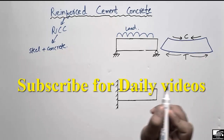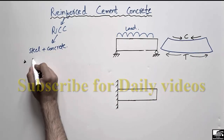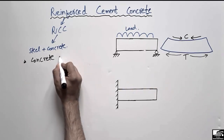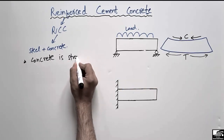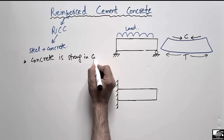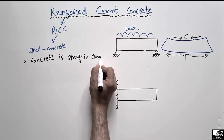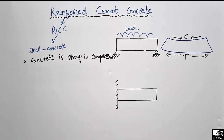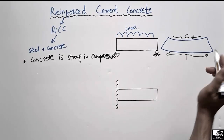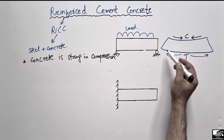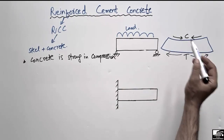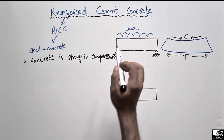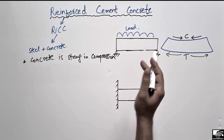As we know, concrete is strong in compression, so it can easily take compressive stresses or compressive load without any failure. But when there is no steel bar present, upon loading, the deflection of the beam increases significantly.